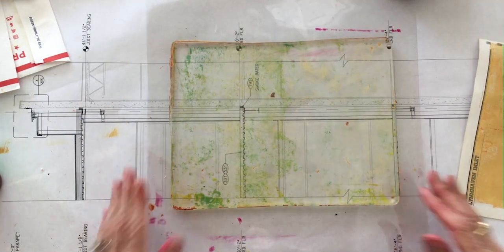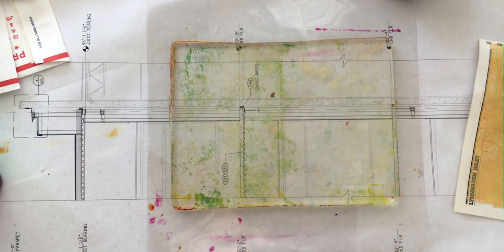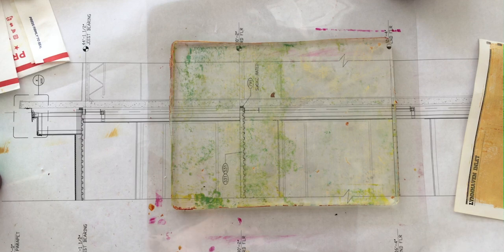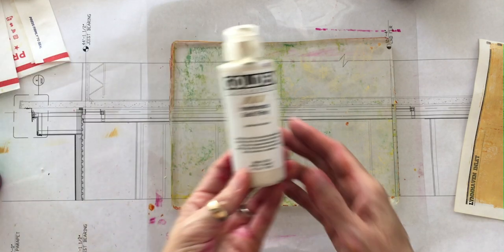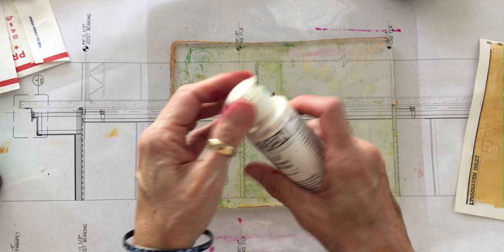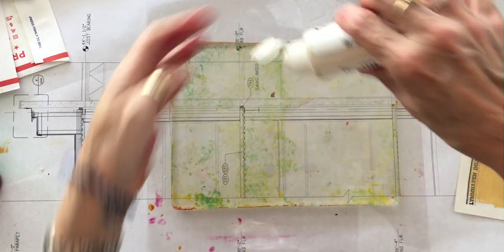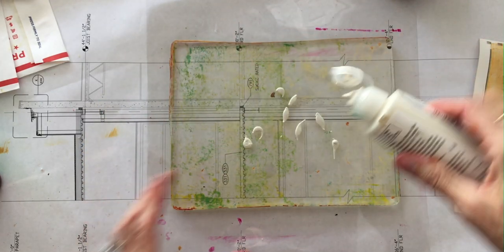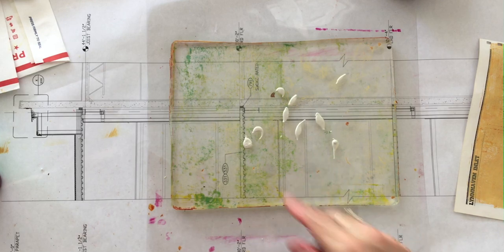Now to give this a little bit more visual interest, I'm going to put a little bit more of a second color on it. I'm going to do a little Interference Gold from Golden Fluid Acrylic. This is going to give it a gold shimmer, but not necessarily a gold color. So I'm going to put a little bit of that out.